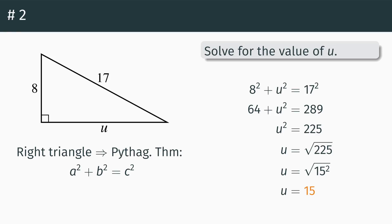Notice how everything came out really cleanly in this problem — we had eight for one leg, fifteen for the other leg, and seventeen for the hypotenuse. There's a special name for situations like this, when all of the sides come out really nice and cleanly as whole round numbers. We call them a Pythagorean triple, and there's an entire extra video on that. It can help speed you up on tests — Pythagorean triples tend to show up a lot on standardized tests.